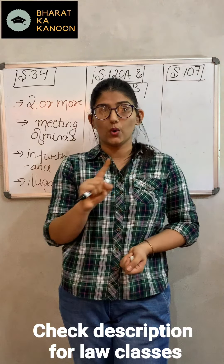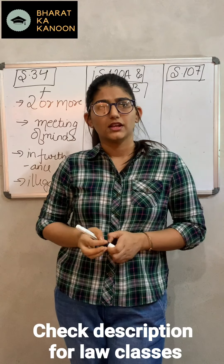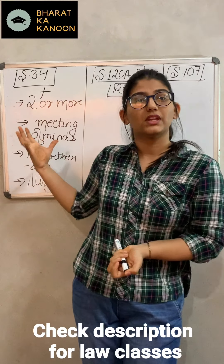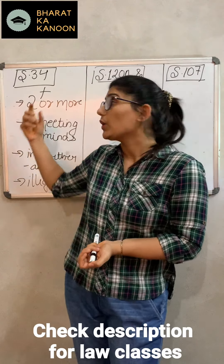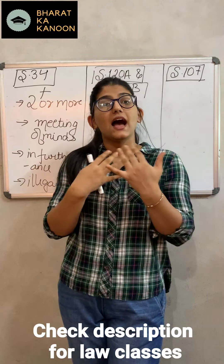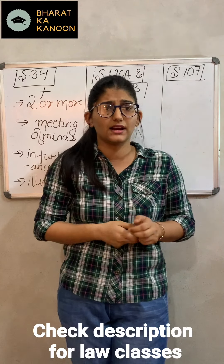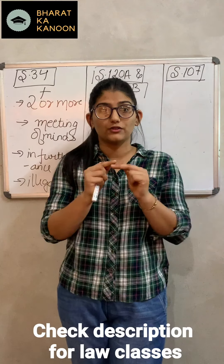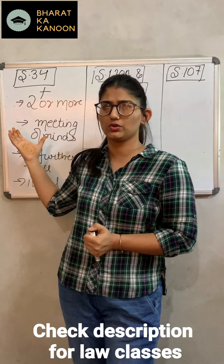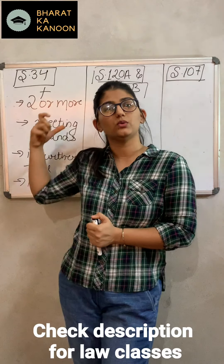Common intention itself is no offence — it is always added with some offence. For example, if theft has taken place by two people, and they both with a common intention went to commit theft, we will say theft has been done with common intention. Why? So that we could try them together and punish them together, and so they couldn't take the leverage of saying 'I was just standing at the gate, I didn't actually do the theft.' No — if you are part of it with a common intention, then you will be liable. This is why common intention is added with one offence and then we say that such offence has been done with common intention.